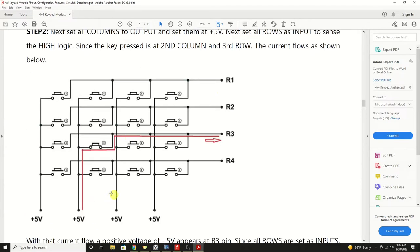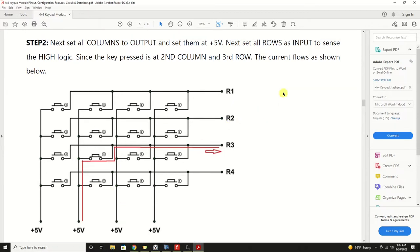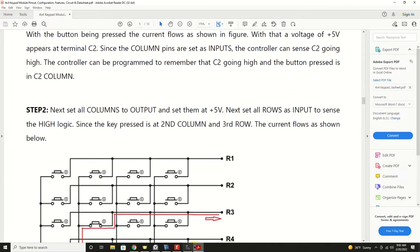Here they're showing powering it the opposite way, powering the columns and reading the rows. Again, it's irrelevant. It's whichever way you want to go. No advantages. Now let's take a look at this on the fritzing diagram.